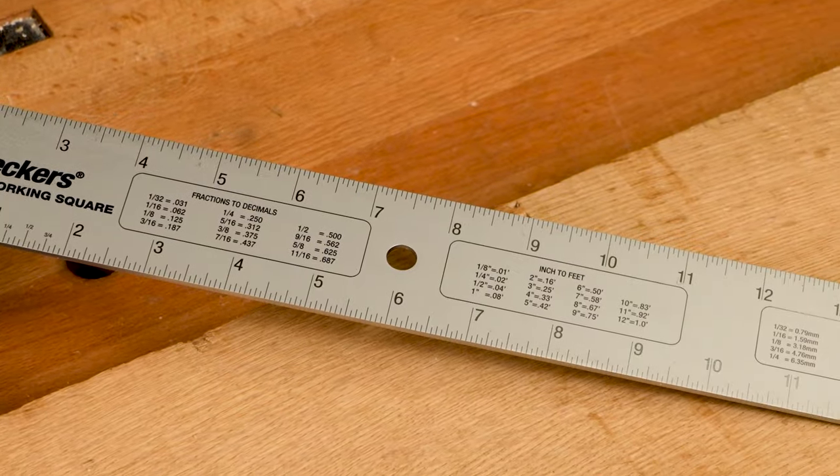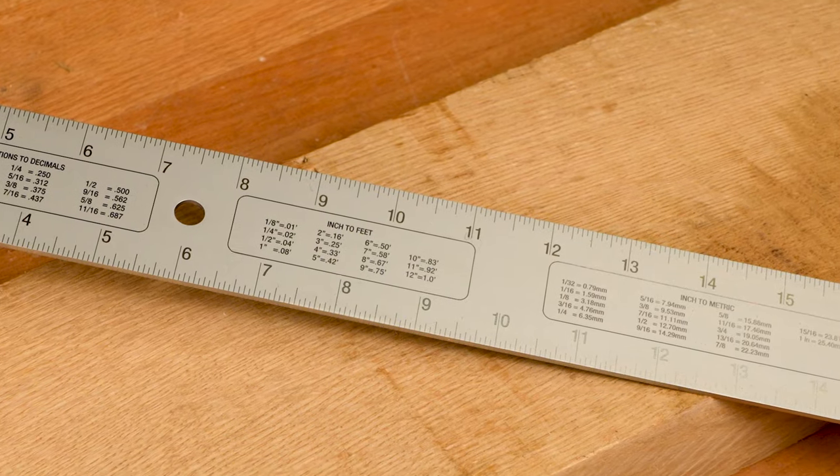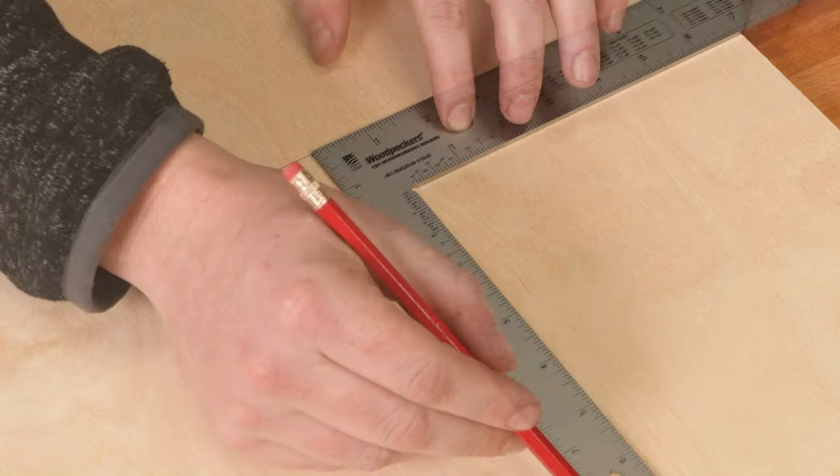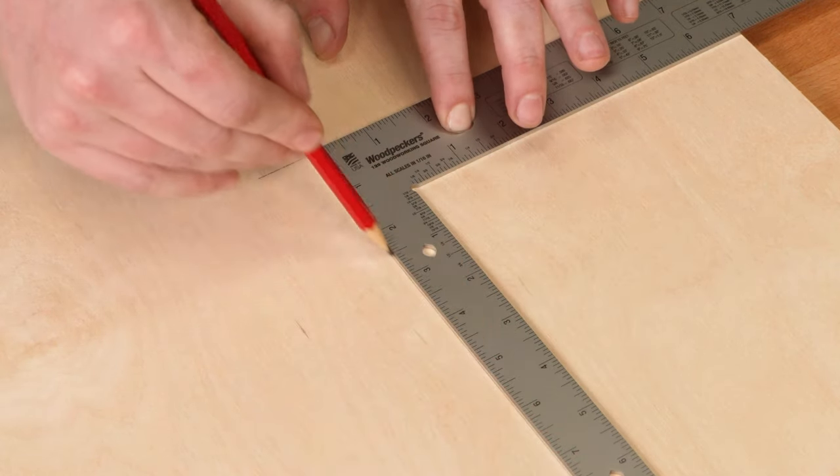The other side features handy conversion charts when you're working with decimals or millimeters. Our new woodworking squares lay perfectly flat on your board, and they're only three thirty-seconds of an inch thick, minimizing parallax error.